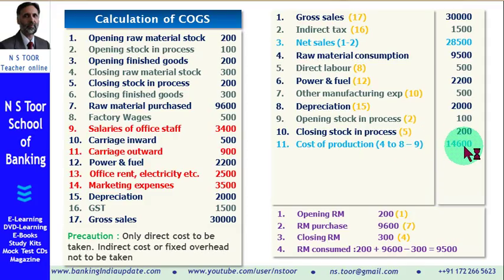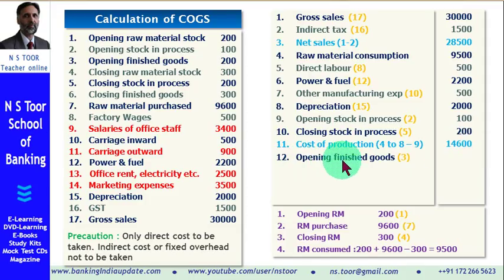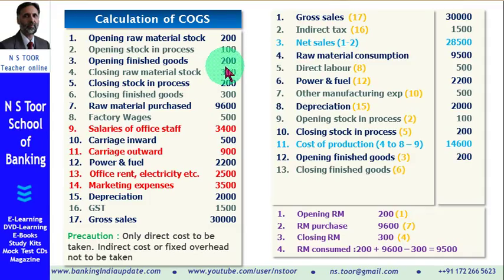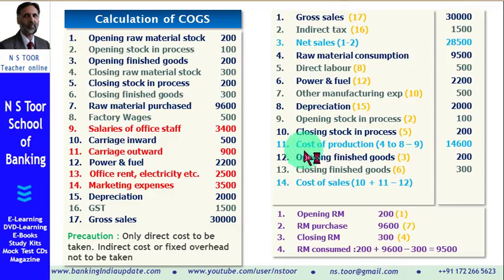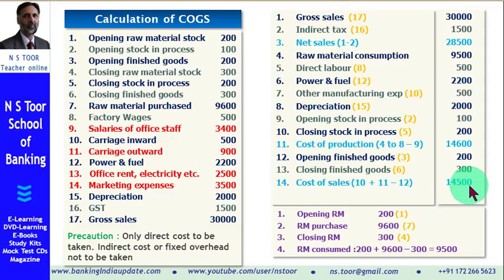This is the cost of production, but we need to calculate cost of sales. From cost of production we can calculate cost of sales. We take opening finished goods stock, item number 3, which is 200, and deduct closing finished goods stock, item number 6, which is 300. So cost of sales equals cost of production plus opening finished goods minus closing finished goods — that is items 10 plus 11 minus 12 — giving us a cost of sales of 14,500.